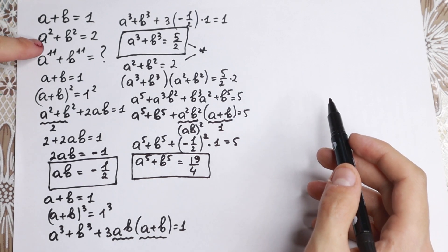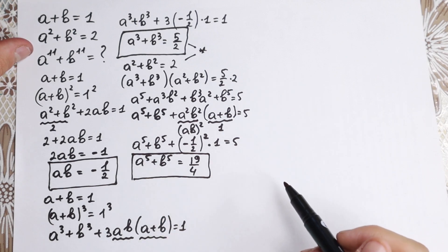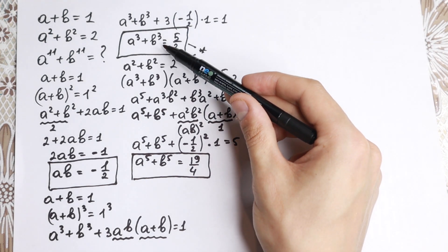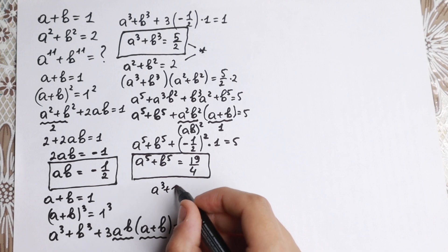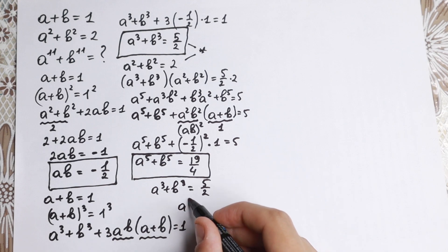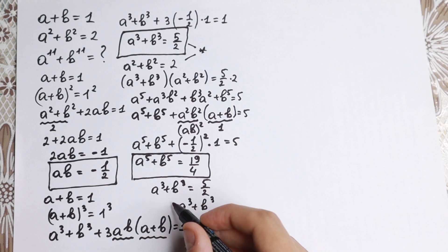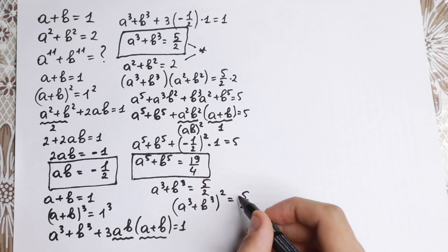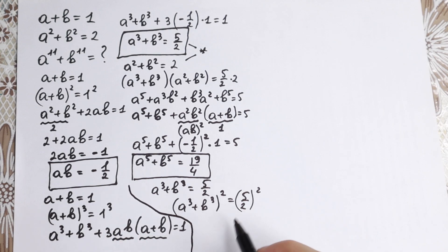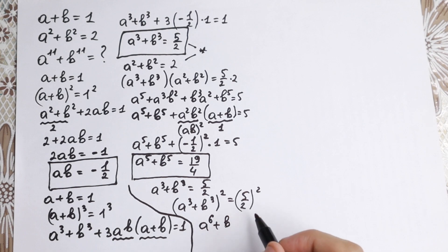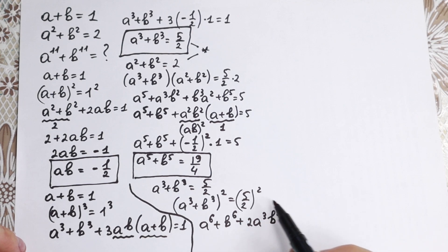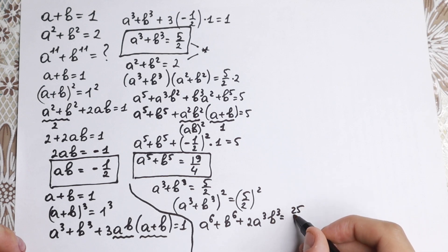As you can see, we have an 11th power target and currently a fifth power result. We need a sixth power as well — then multiplying fifth and sixth gives 11th. To get the sixth power, take the result a cubed plus b cubed equals five halves and square both sides: (a cubed plus b cubed) squared equals (five halves) squared. Expanding: a to the sixth plus b to the sixth plus 2·a cubed·b cubed equals 25 over 4.